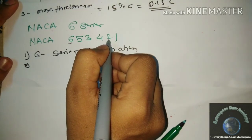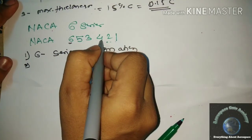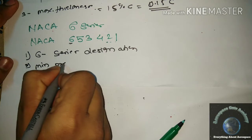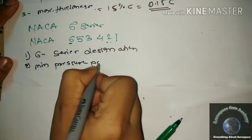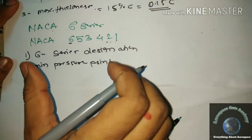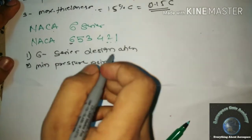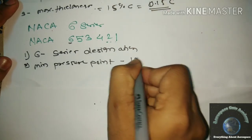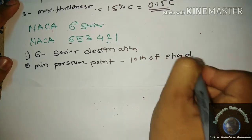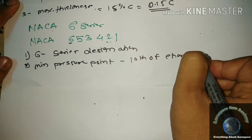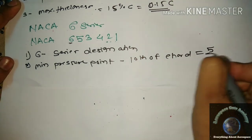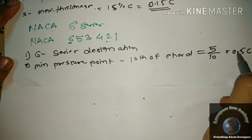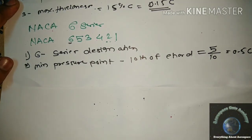The second digit, 5, gives the location of the minimum pressure point on the airfoil. It is expressed in tenths of the chord, so we divide 5 by 10, giving a minimum pressure point location of 0.5C from the leading edge.